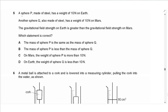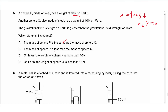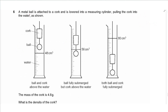Question 5 says: sphere P made of steel has weight 10 newtons on Earth. Another sphere Q, also made of steel, has weight 10 newtons on Mars. The gravitational field strength on Earth is greater than on Mars. Using the equation W = mg, as field strength decreases the mass must increase for them to have the same weight of 10 newtons. So the mass of Q must be greater than the mass of P, making the answer B.